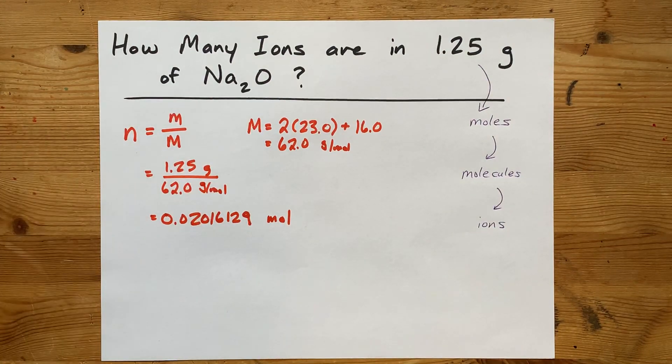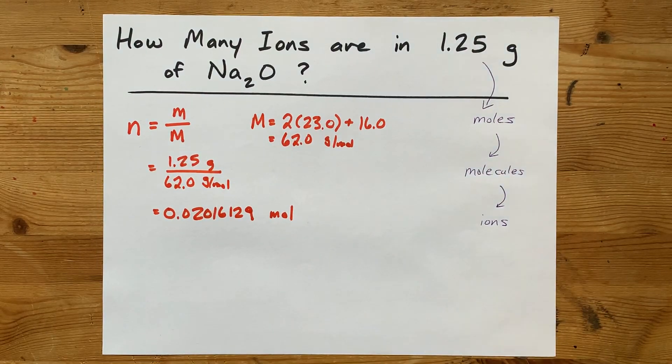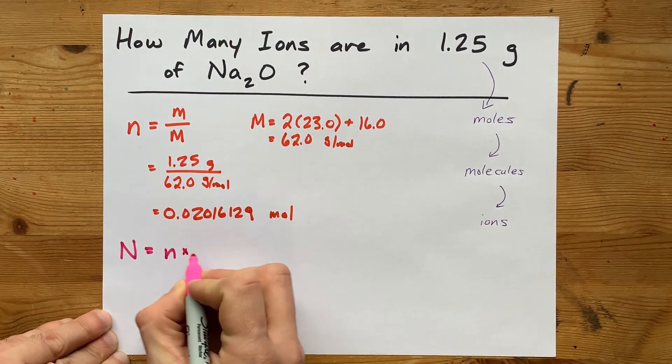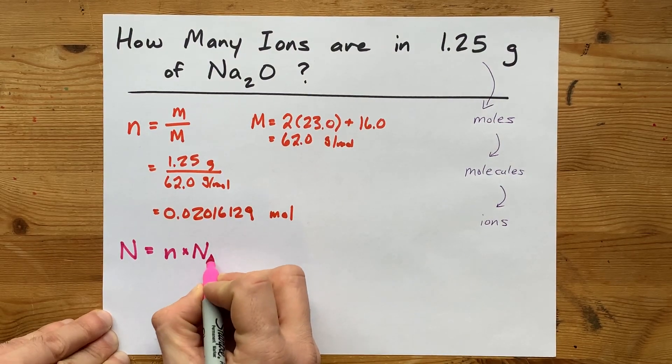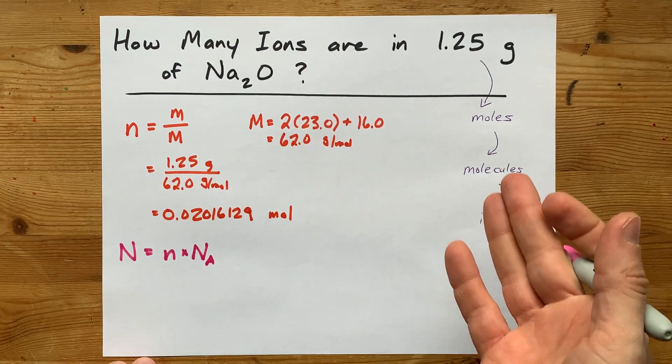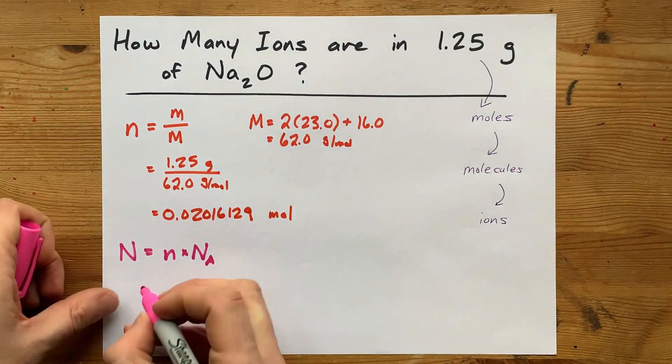The way that you calculate number of molecules or formula units from moles is to take number of moles and multiply it by Avogadro's number. So, capital N here is number of particles, molecules, or again, in this case, it's formula units.